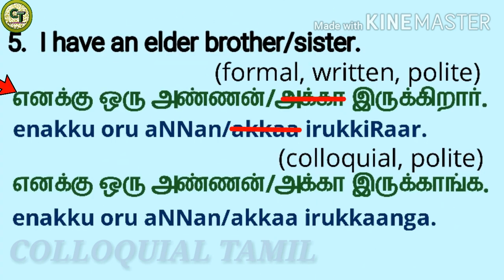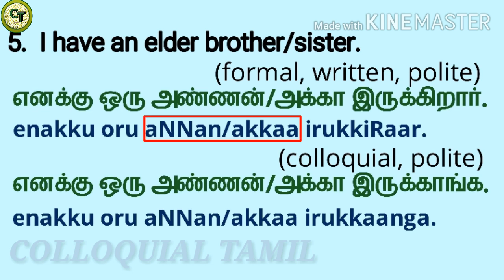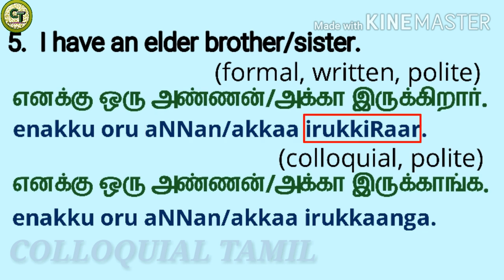To say 'I have an elder brother' — 'I have an elder sister' — 'I have an Akka.' This is in formal form, which is also the written form and the polite form. We learned Annan and Akka in the Learn Tamil Words Part 3 video, which I uploaded yesterday. For 'Irikkira,' just remove the last two letters in 'Irikkira argala,' which you learned in the Colloquial Greetings Part 4 video.